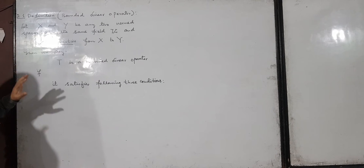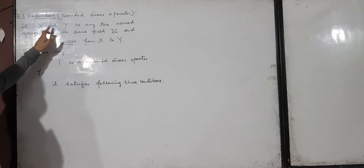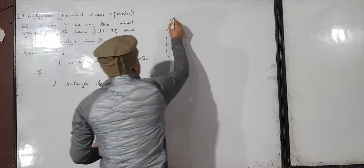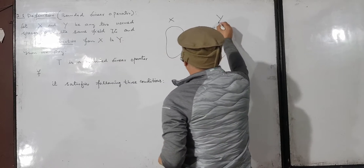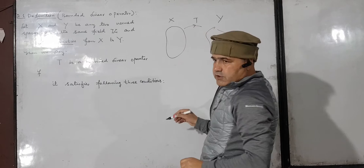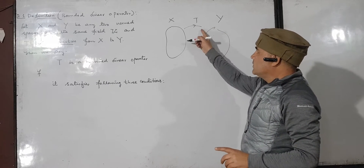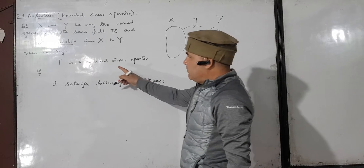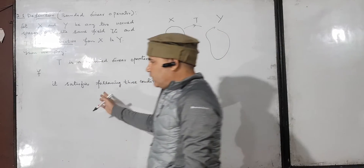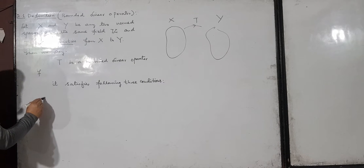So suppose we have taken X and Y as any two norm spaces. These are two norm spaces and T is a function from X to Y. Then this function T is known as a bounded linear operator if it satisfies the following three conditions. Condition number one: